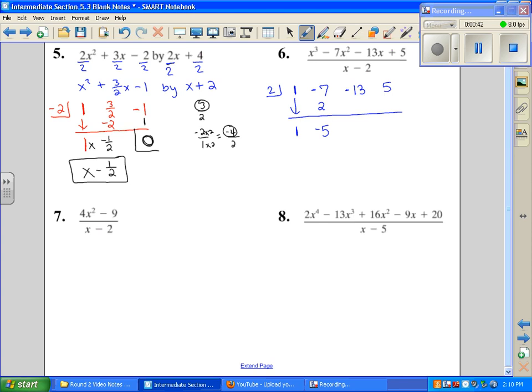We start over, two times negative five is negative ten, add down, negative thirteen plus negative ten is negative twenty-three. I'm going to multiply two times negative twenty-three is negative forty-six, add down, and this is our first one that has a remainder.